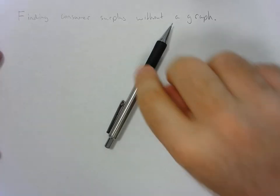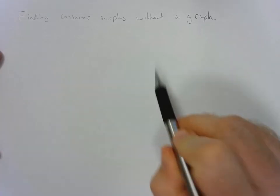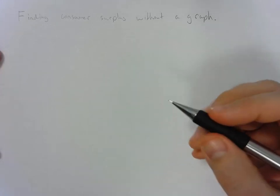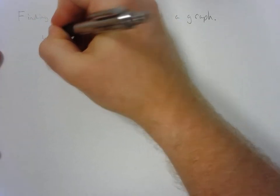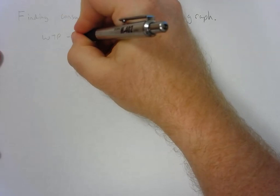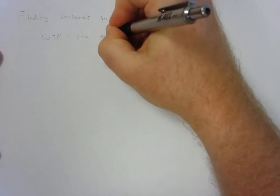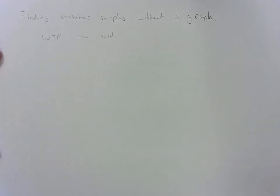This quick video is going to go over finding consumer surplus without a graph. The trick is to find your willingness to pay and subtract the price paid. We'll go through some examples of how this works, when it works, and when it doesn't.